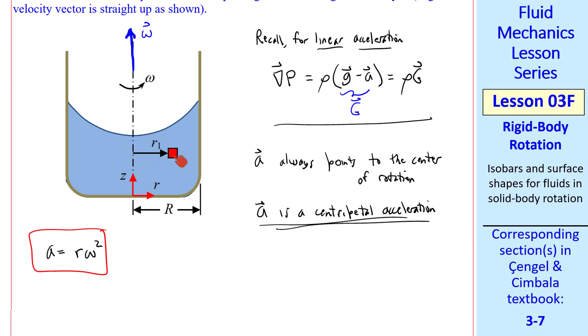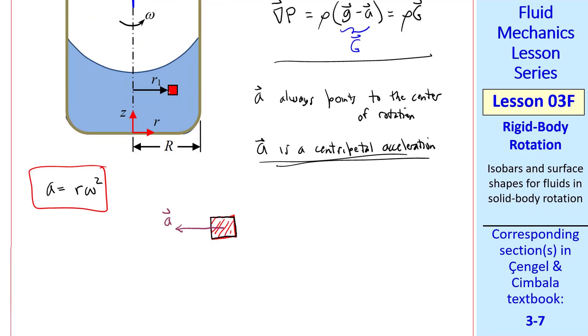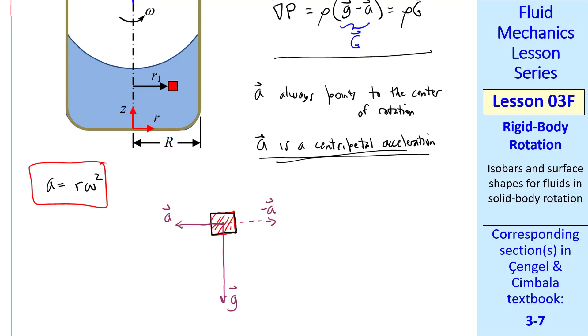Imagine a camera moving with this little fluid particle as it spins around. What would we see? We would see acceleration A towards the middle, and we would also have our gravity acting. So if our camera is moving with this little element of fluid, we would see a steady acceleration to the left. And we can analyze this in exactly the same way that we did in the previous lesson.